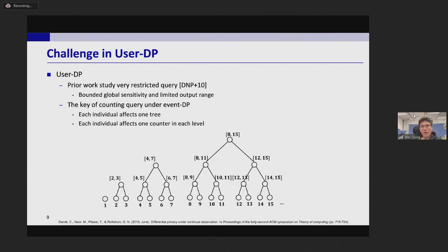Then let's consider user-DP and this will introduce new challenges. The prior work can only study the queries with bounded global sensitivity and limited output range. Actually such query is very restricted and even does not involve counting query. As mentioned before, the key property of counting query under event-DP is that each individual can only affect one tree and can only affect one counter in each level in that tree. However these properties do not hold under user-DP since each individual can correspond to arbitrary number of data updates.